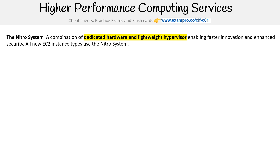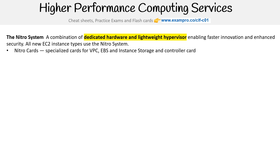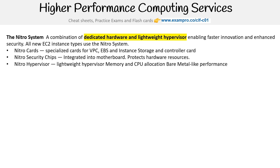So this is made up of a few things. We have Nitro Cards — these are specialized cards for VPCs, EBS, instance storage, and controller cards. You have Nitro Security Chips, which are integrated into the motherboard and protect hardware resources. And we have the Nitro Hypervisor — this is the lightweight hypervisor for memory and CPU allocation, providing bare metal-like performance.